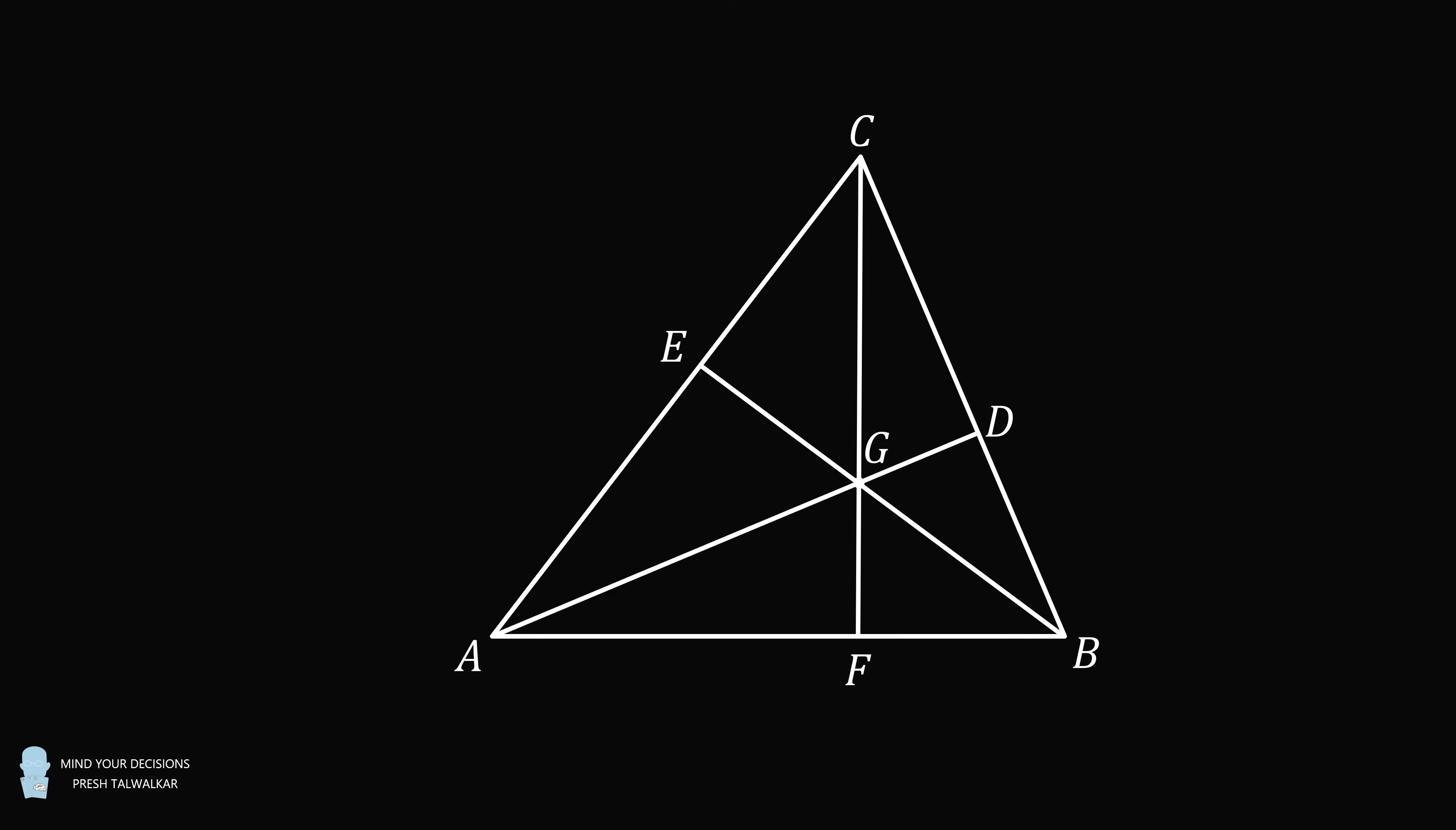This divides the triangle into six smaller triangles. We know the areas of four of these smaller triangles. CEG equals 84, BDG equals 35, BFG equals 30, and AFG equals 40. Assuming such a triangle construction exists, what is the area of triangle ABC?